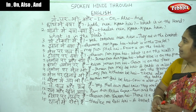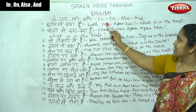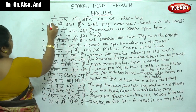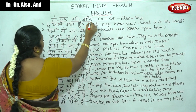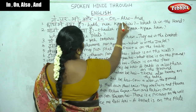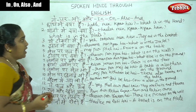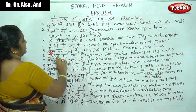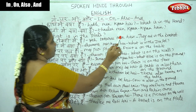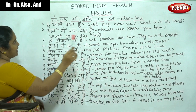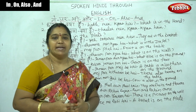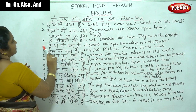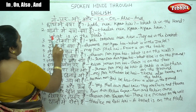Let us see the sentences. The key words are: may, par, bi, aur, and okay — these are in English: in, on, also, and. How can we use these in sentences? Haat may kya hai — what is in the hand? Haat may pencil hai — the pencil is in my hand.